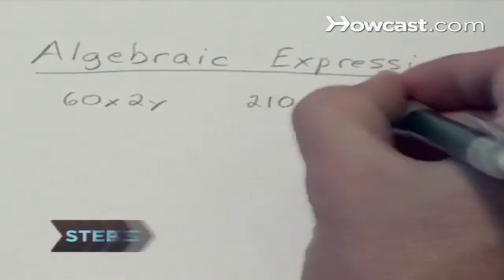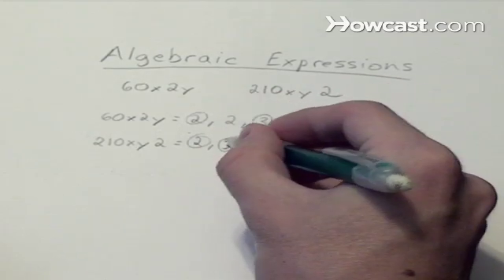Step 3. Identify all of the common factors in a series of algebraic expressions. Step 4. Use the expressions 60x squared y and 210xy squared.